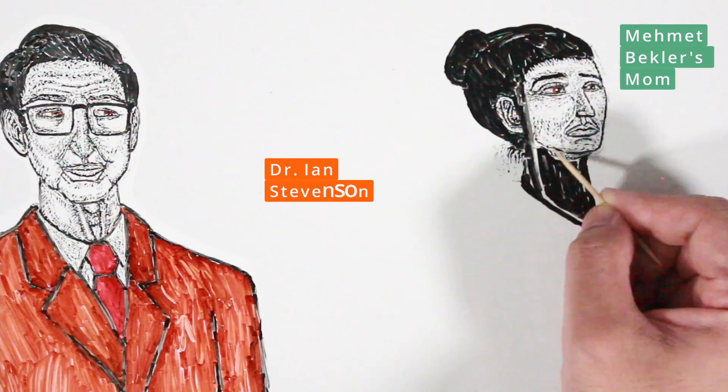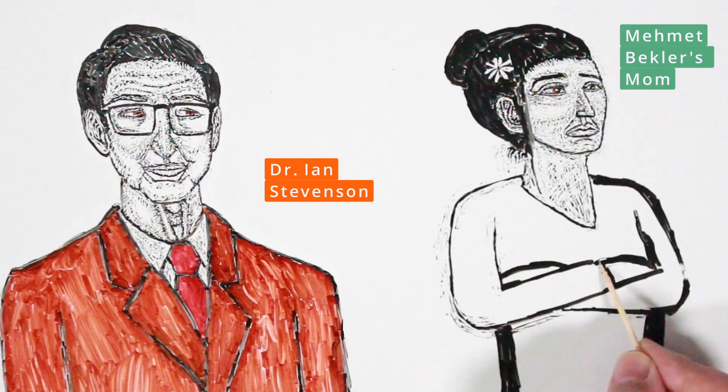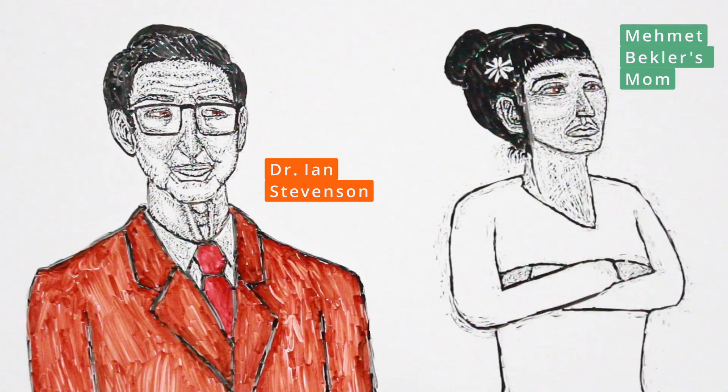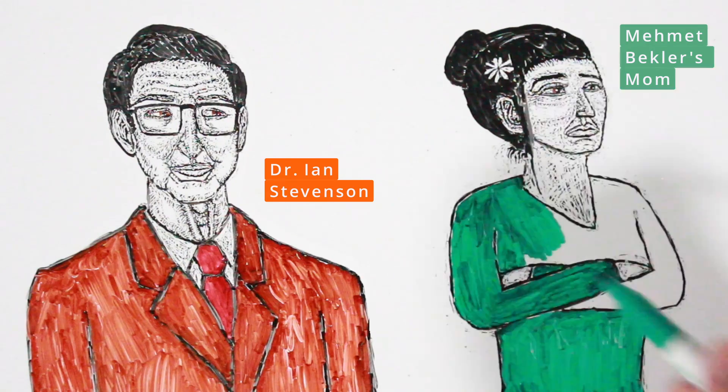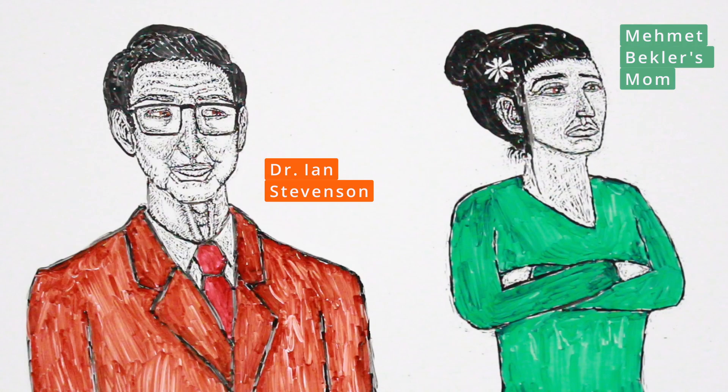Because Suleyman had a possessive attitude toward Mehmet Bekler's property, Dr. Ian Stevenson speculated that Bekler's mother didn't accept Suleyman's reincarnation claims because she didn't want Suleyman to own her property.